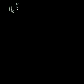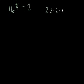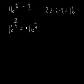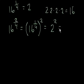16 to the 1 fourth power — think about what that is. That means some number to the fourth power is 16. If you've been practicing your level 1 exponents, you know that equals 2, because 2 times 2 times 2 times 2 equals 16. So 16 to the 1 fourth is equal to 2. What do you think 16 to the 2 fourths is equal to? We know from that last problem that's the same thing as 16 to the 1 fourth, squared. 16 to the 1 fourth is 2, so that equals 2 squared, which equals 4.